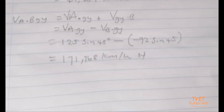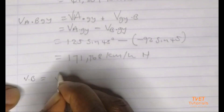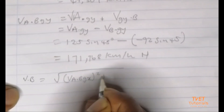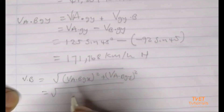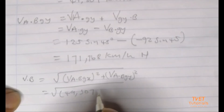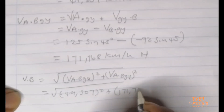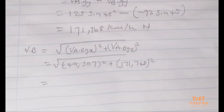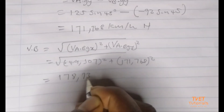Now we are going to use the two values to calculate the velocity of A relative to B. We will use the Pythagorean theorem: square root of (velocity of A relative to B in x)² plus (velocity of A relative to B in y)². We put in our values: √(49.507² + 171.768²), and our calculator gives us 178.731 kilometers per hour.